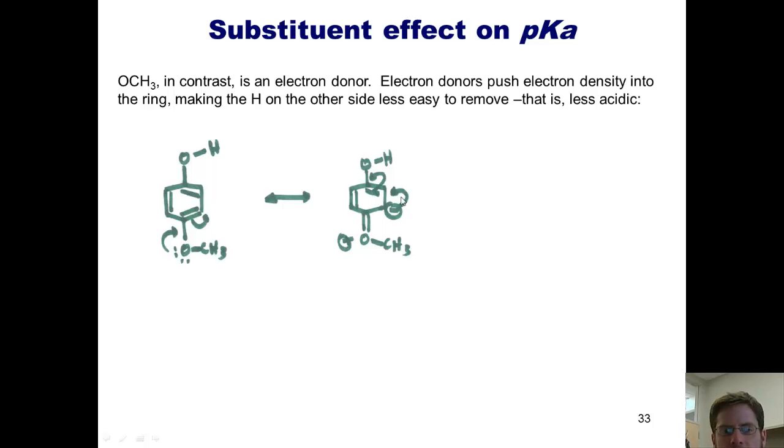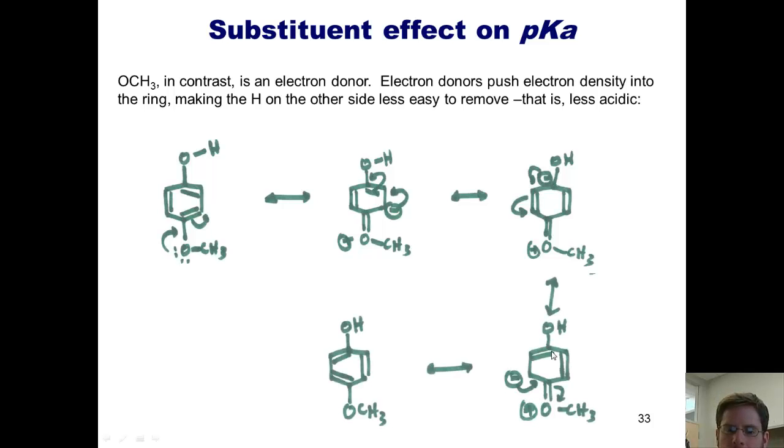This minus charge can then close down here to form a double bond, and this minus charge can go on to that central carbon, giving me this resonance structure. Now, of course, I've continued to draw these resonance structures all the way down below until we get back to where we started. But the most interesting and important resonance structure is this one right here.